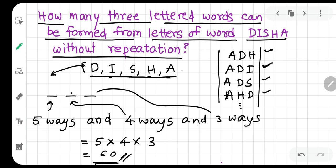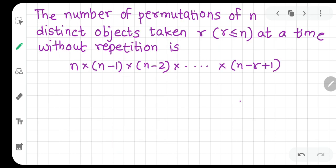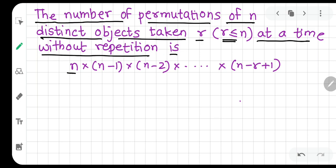Sometimes you must be able to think about what exactly these 60 words are and how they are being formed. Now going forward, let's understand this: the number of permutations of n distinct objects taken r at a time, where r is always less than or equal to n without repetition, is n into (n-1) into (n-2) into up to (n-r+1).